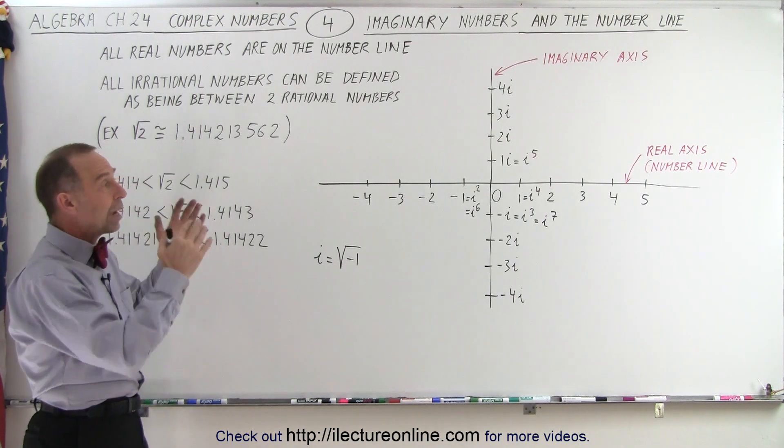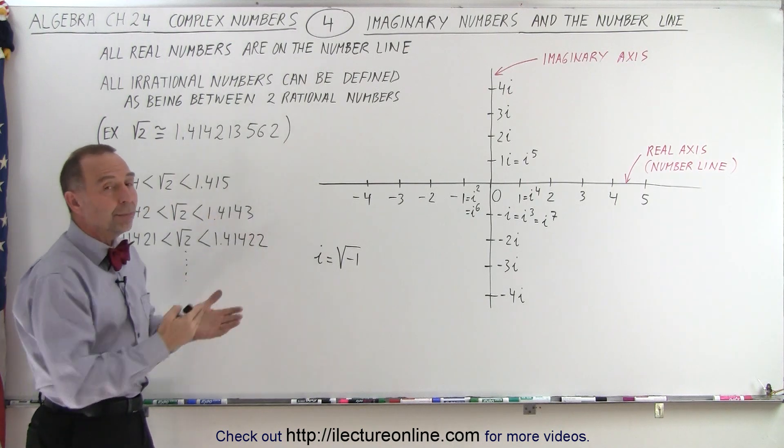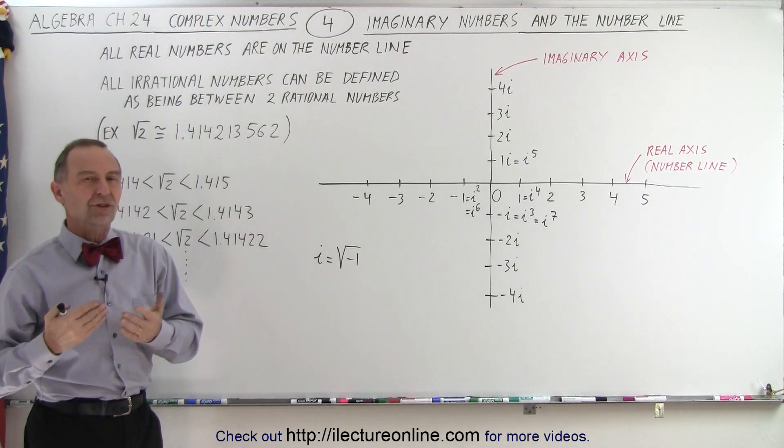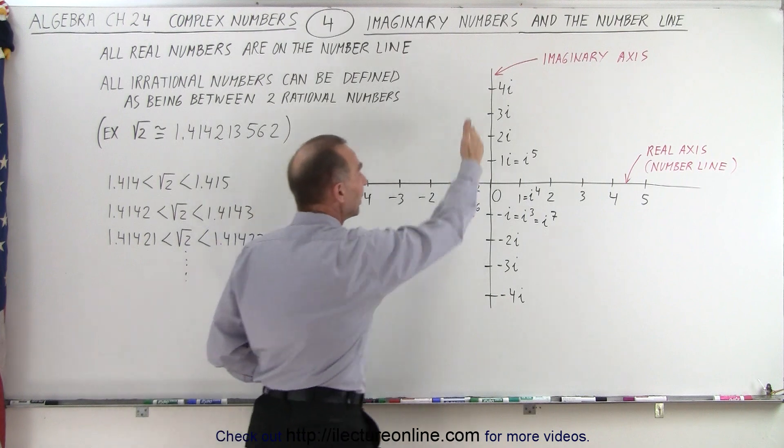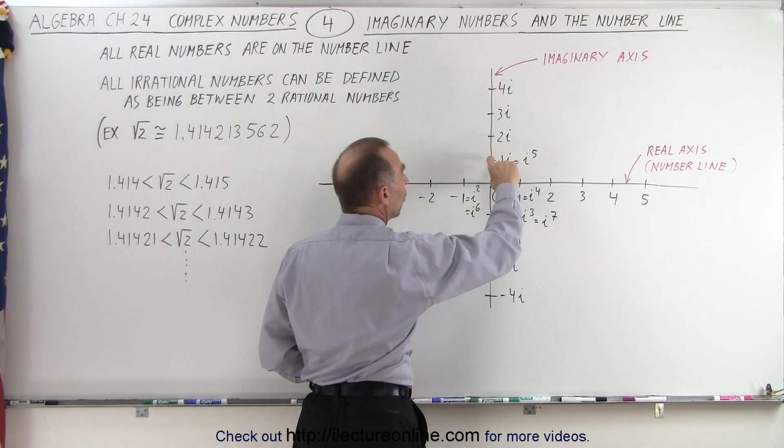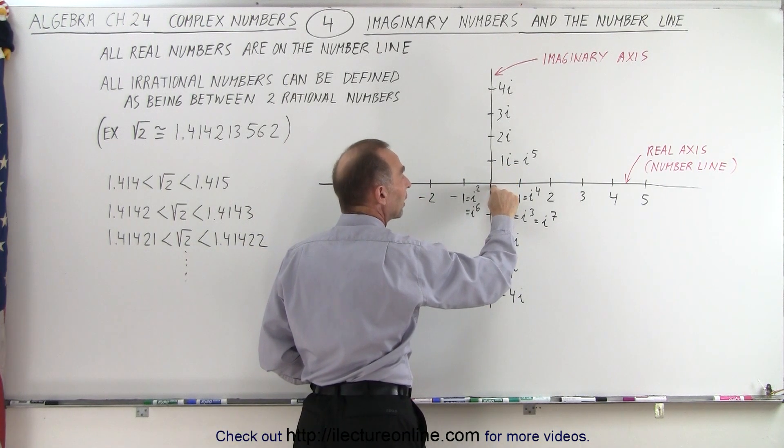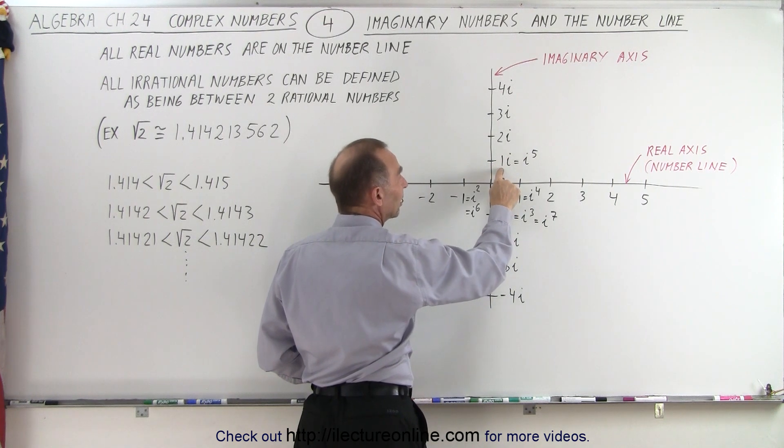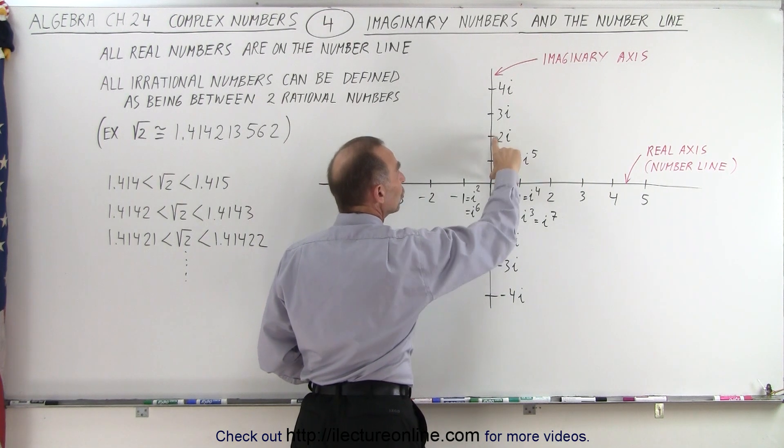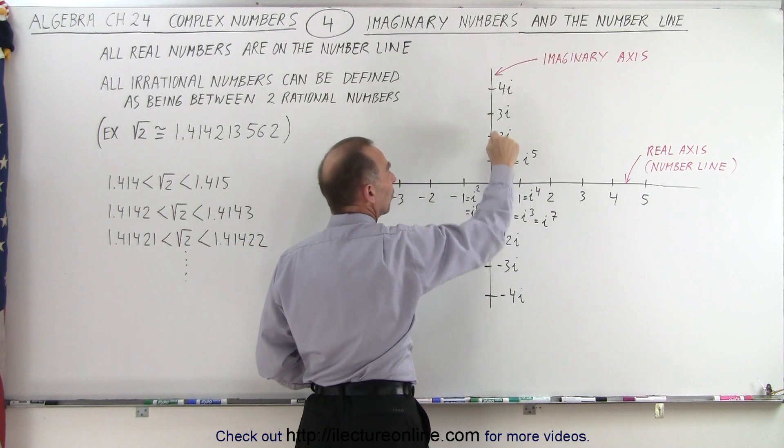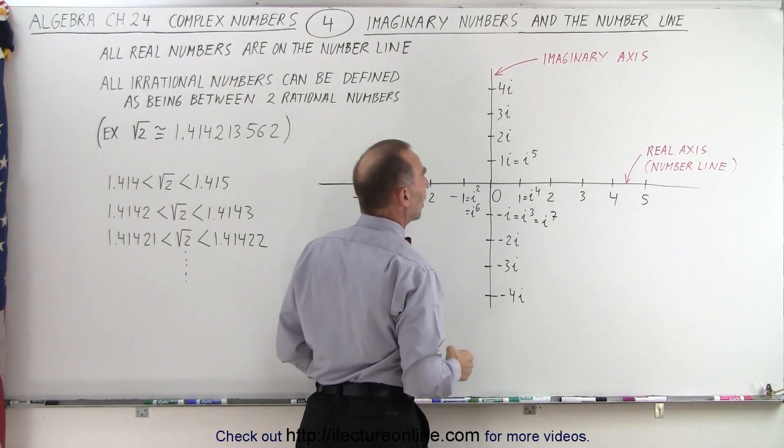And so we have a way of placing them on what we call the imaginary axis, which runs perpendicular to the real axis. In other words, if we go one unit away from the origin here, then we realize that's equal to 1i. If we go two units away, that's 2i. Three units away is 3i. Four units away is 4i.